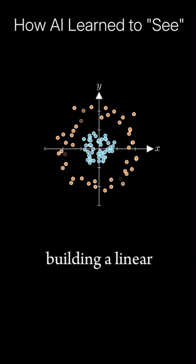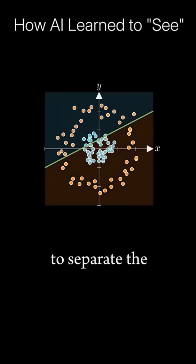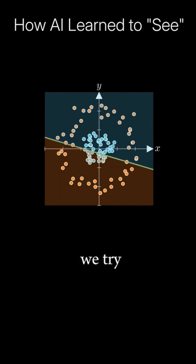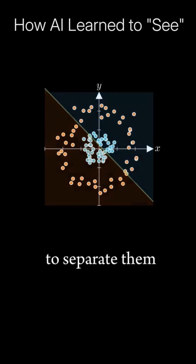In this space, building a linear classifier to separate the two groups is very hard. No matter how we try, we can't find a good way to separate them.